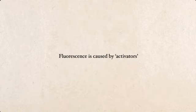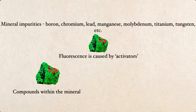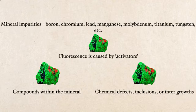Fluorescence itself is caused by activators within the mineral or compound. These are actual components within the mineral itself — mineral impurities like lead, tungsten, and others — or even just the usual chemical defects, inclusions, and similar anomalies. Really, an activator can be a lot of different things.